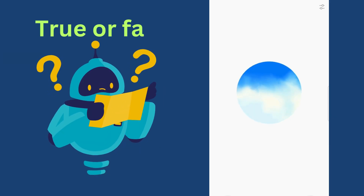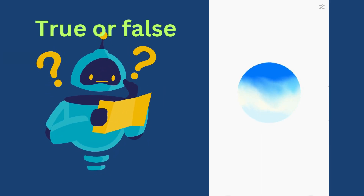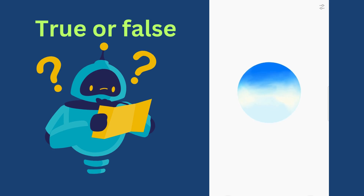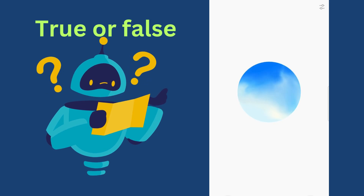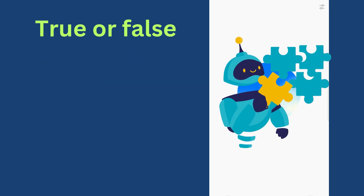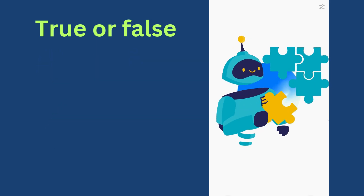True or false: determine if the statements are true or false. A: She goes to the gym every day. B: We usually watch TV in the evening.